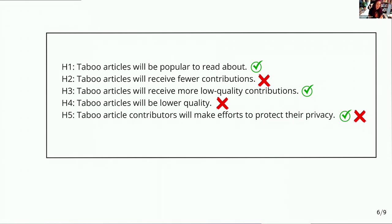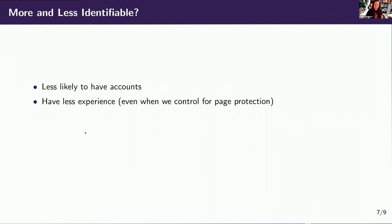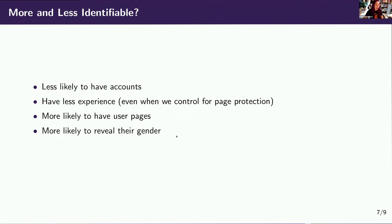The fifth idea I tested is that article contributors would try to protect their identity — make themselves less identifiable. And I was right in some ways but wrong in others that are pretty important. Contributors to taboo articles are less likely to have accounts and tend to have less experience, even when we control for page protection on those articles. But those who do have accounts are more likely to have user pages, more likely to reveal their gender, and more likely to make themselves emailable than the average. So these are explicit steps that actually make contributors more identifiable to others as they're contributing to these taboo articles.